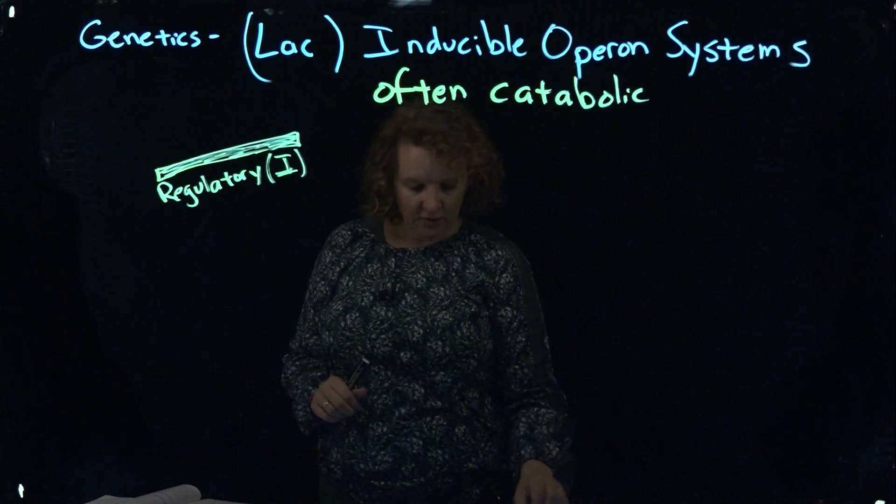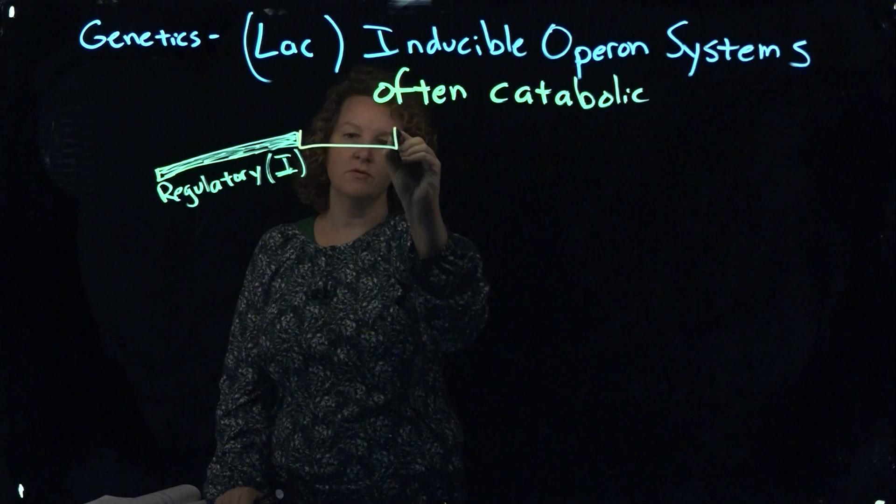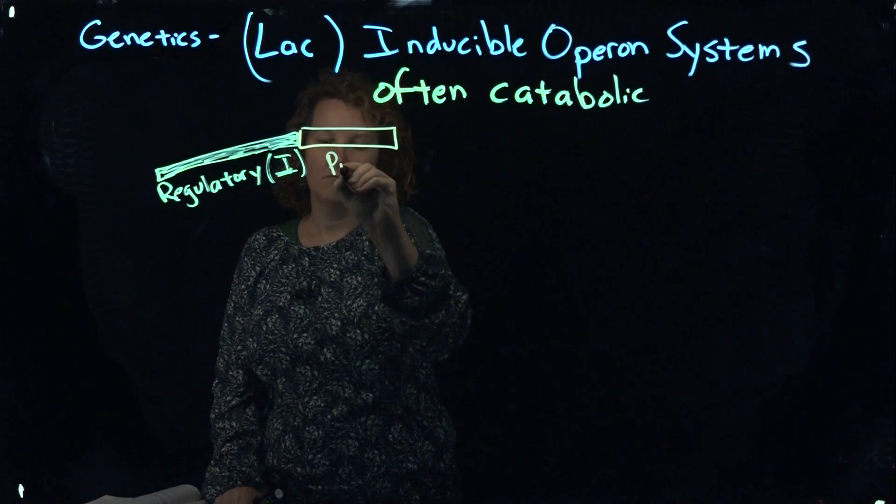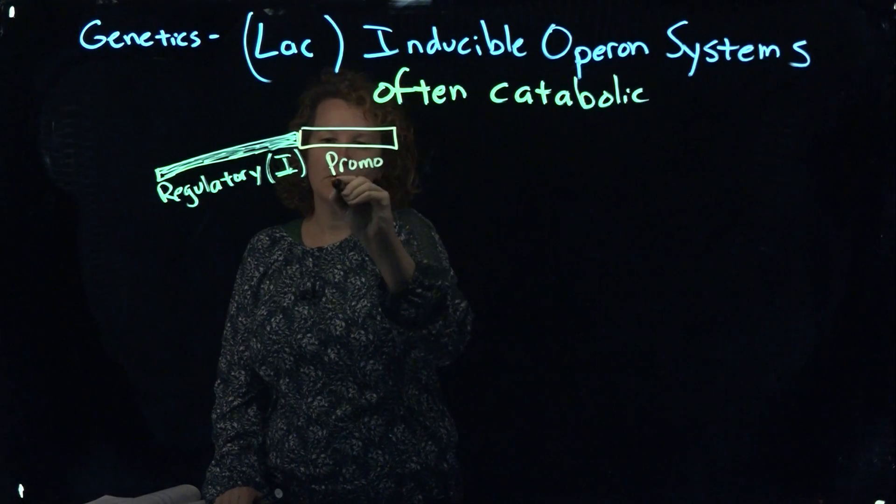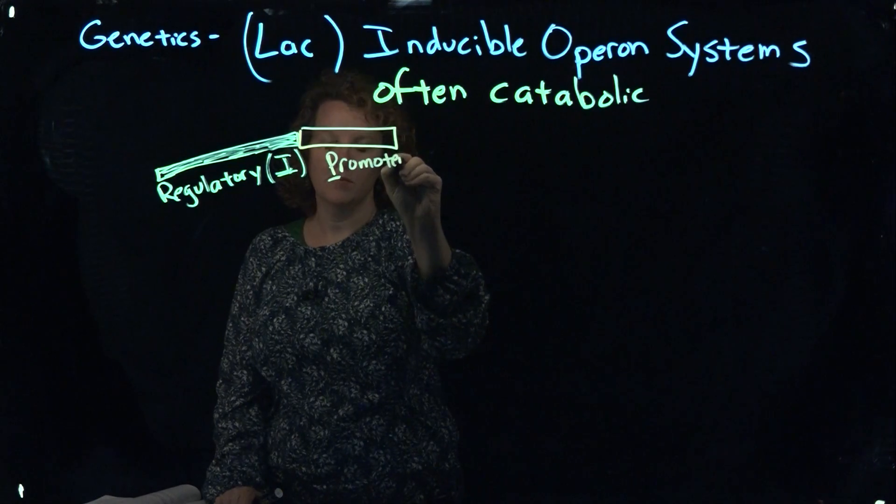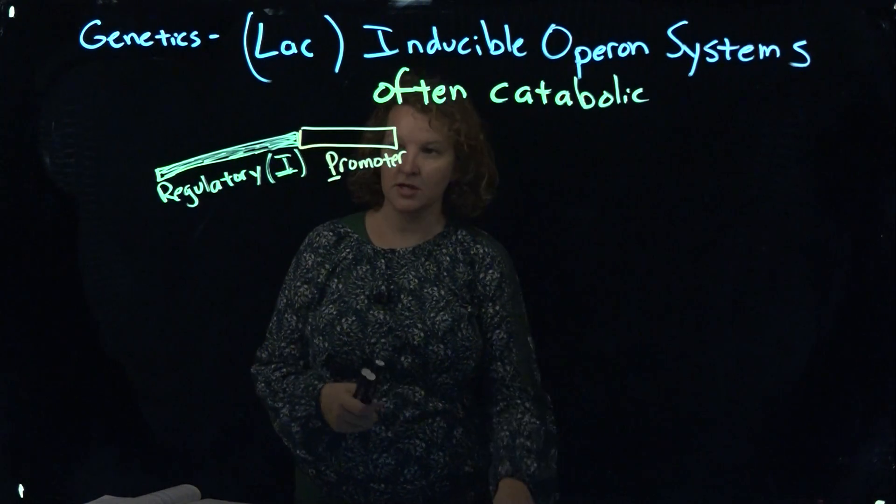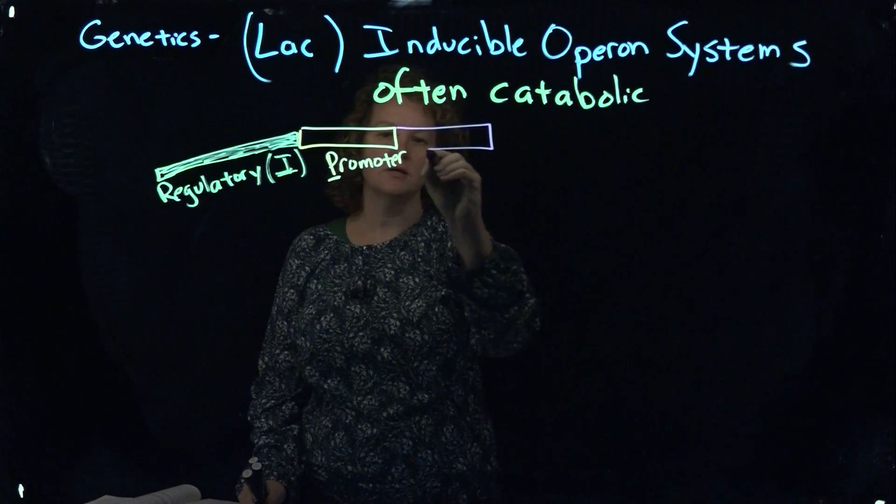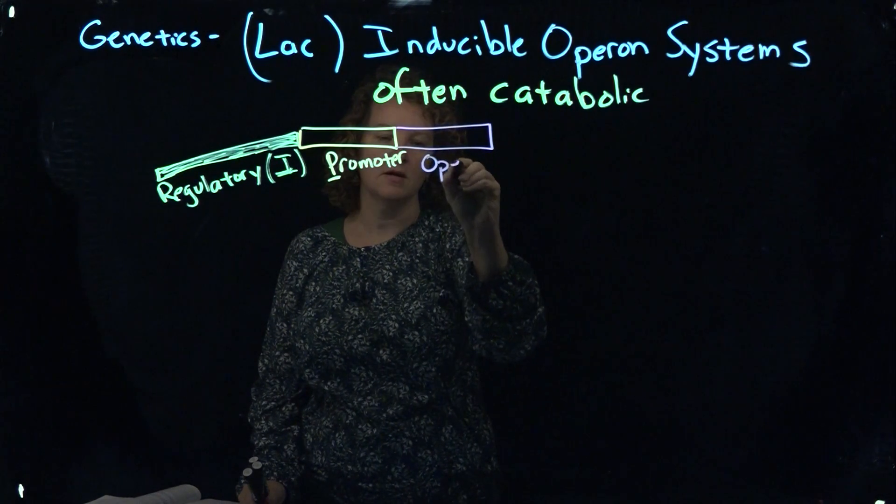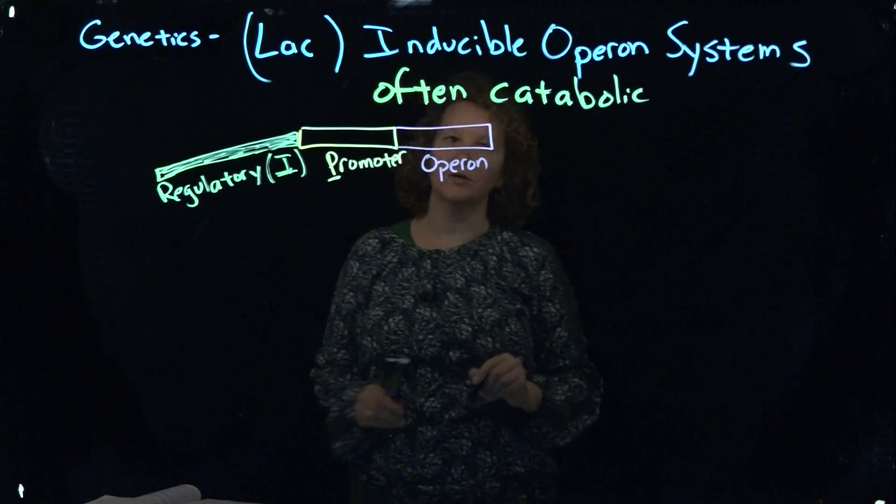So next to that you'll have what's called a P or promoter region, and then next to that you have an operon region, and that's where the control occurs.